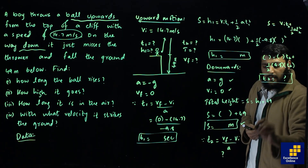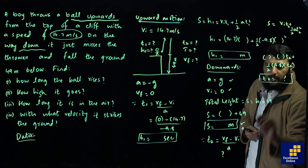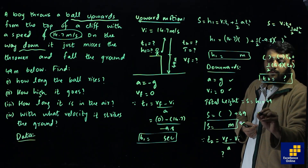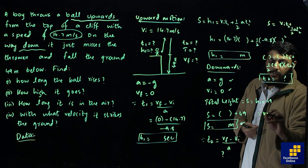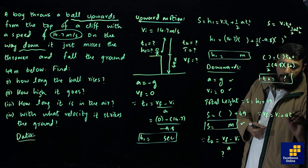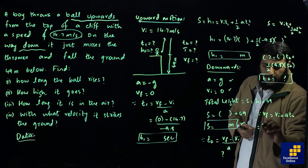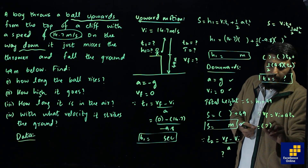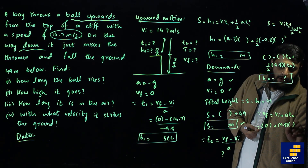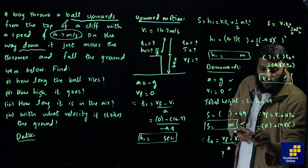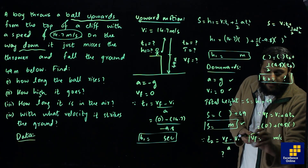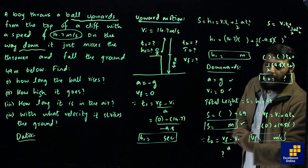Finally, using vf = vi + a·t2, where vi = 0, a = 9.8, and t2 is the value calculated, we get the final velocity vf in meters per second. Thank you.